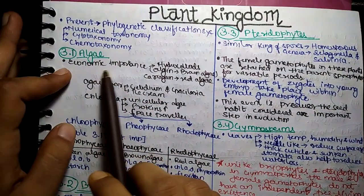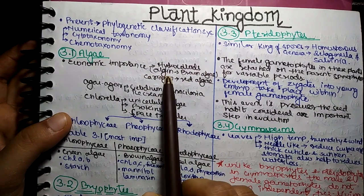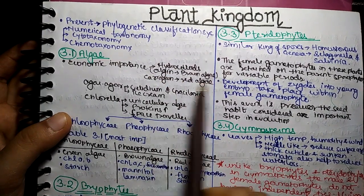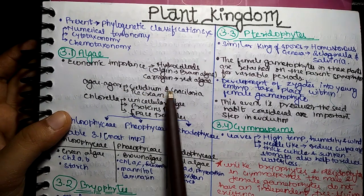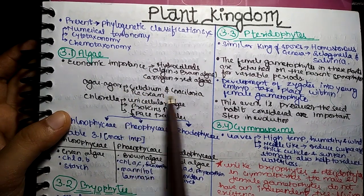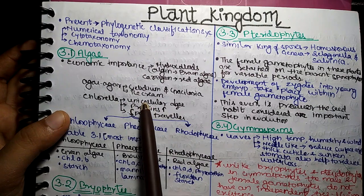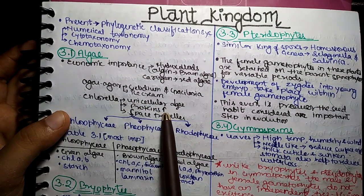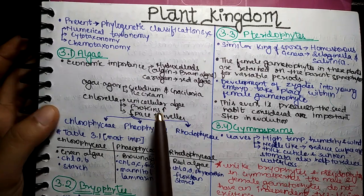Algae has economic importance. Hydrocolloids, for example, brown algae — Carrageenan from red algae. If it is made from Agar and Gracilaria, it can be used in cream. Chlorella — this is unicellular algae. It contains a lot of protein, used as a space traveller food.